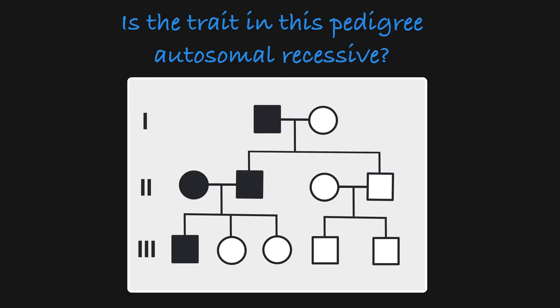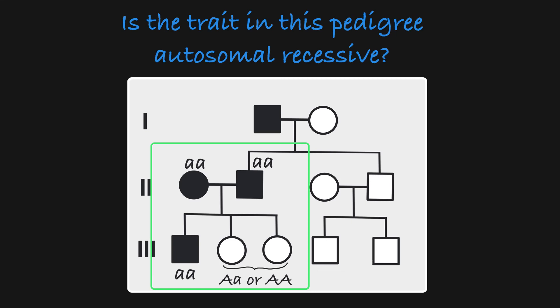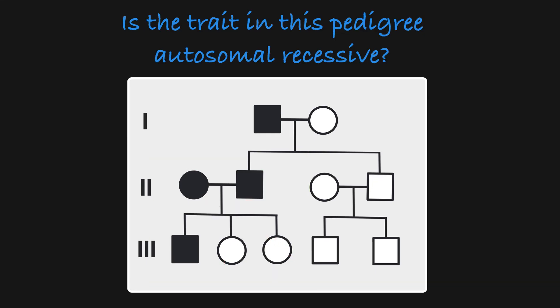Now let's take a look at this pedigree. Is the trait in this pedigree inherited in an autosomal recessive manner? Looking at this subfamily, we have two affected parents who have an affected son and two unaffected daughters. This is not possible when a trait is carried in an autosomal recessive manner. If the trait were an autosomal recessive trait, then these two affected parents would both be homozygous recessive, and they would only pass on recessive alleles to their offspring. The fact that these two daughters are unaffected means they would not be homozygous recessive. That means this trait does not follow the pattern you would expect with autosomal recessive inheritance, so we can assume the trait in this pedigree is inherited by some other mode of inheritance.